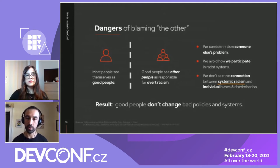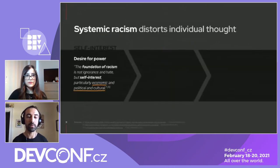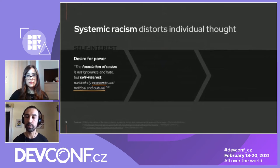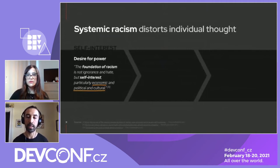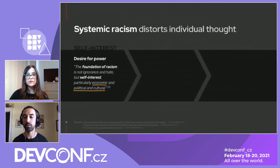Let's look at the word systemic racism — it's something that distorts individual thought. The foundation of racism is not ignorance and hate, but actually self-interest — usually economic, political, or cultural — that people have taken and distorted to set up institutions that carry out systemic racism. Systemic racism is racism embedded as a normal practice within a society or organization, and its true purpose is to acquire and keep power. It does that by influencing individuals through implicit biases, attitudes, or stereotypes that unconsciously affect our understanding, actions, and decisions.